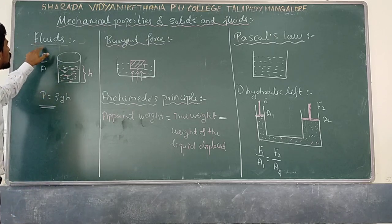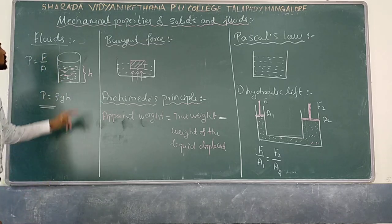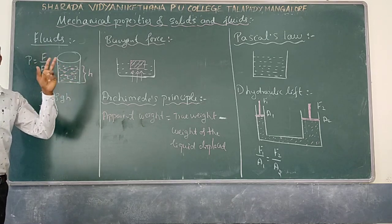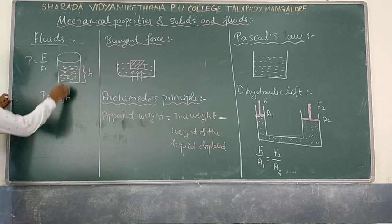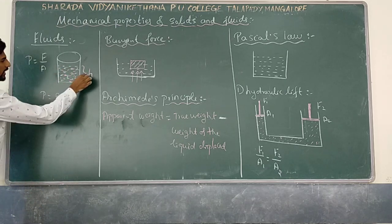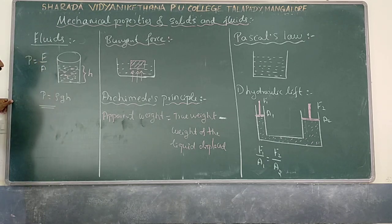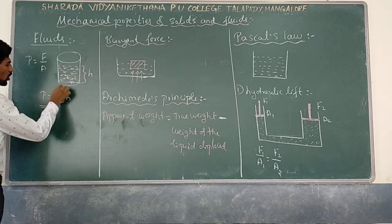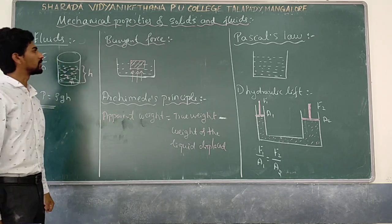Now we can discuss fluids. Fluids are substances that can flow — they may be liquid or gases. Fluids have no definite shape. Pressure is defined as force by area. For a liquid of height H and density rho in a tank, the pressure at the bottom is given by the equation P = rho × g × H.